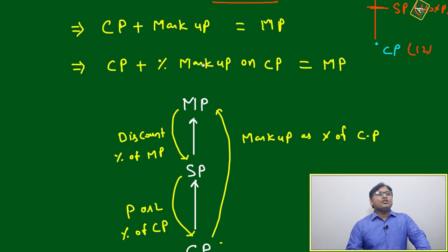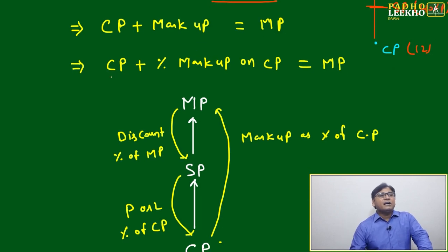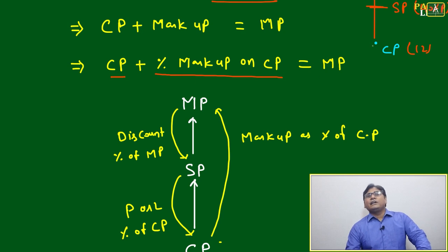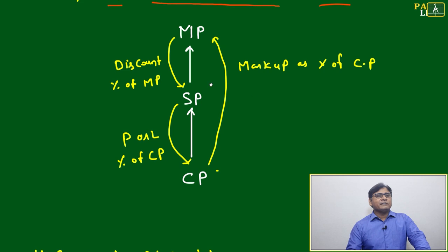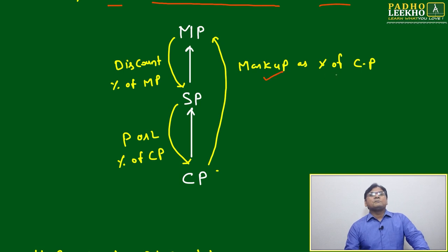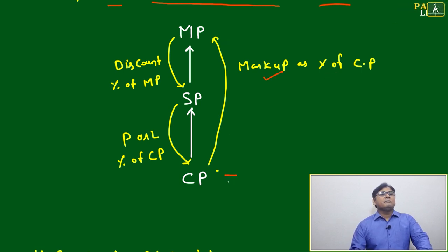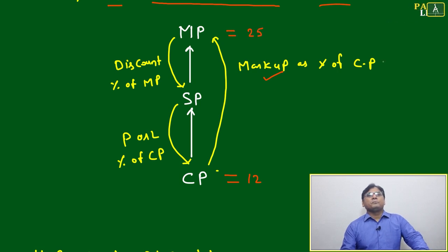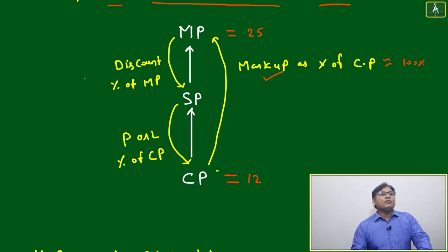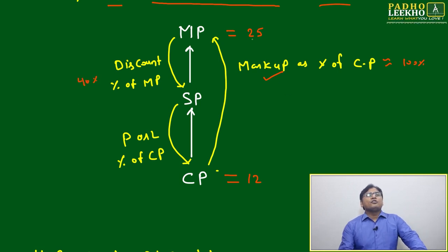Cost price plus markup equals mark price. Cost price plus percentage markup on cost price — I mentioned 100 or 80 percent — equals mark price. We can understand this pictographically: at the top is your marked price, at the bottom is your cost price, and markup is taken as a percentage of cost price. Suppose this pen had a cost price of 12 rupees and you marked it at 25 rupees — approximately 100 percent markup. Then you offer a 40 percent discount.